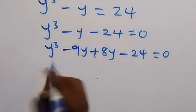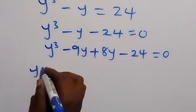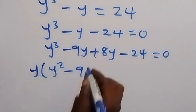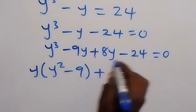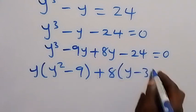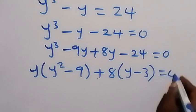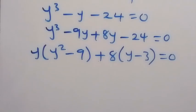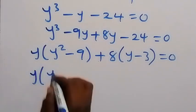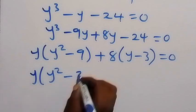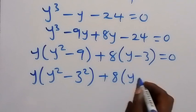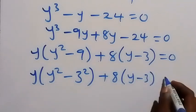From here we factor out what is common in these two groups. What is common in the first group is y, leaving y squared minus 9. What is common in the second group is 8, leaving y minus 3. So we have y(y² − 9) + 8(y − 3) equals zero.